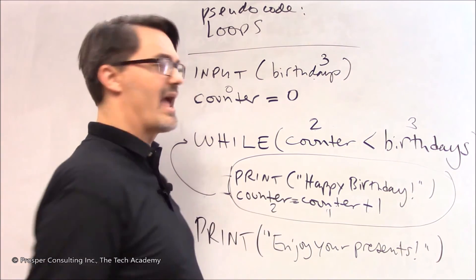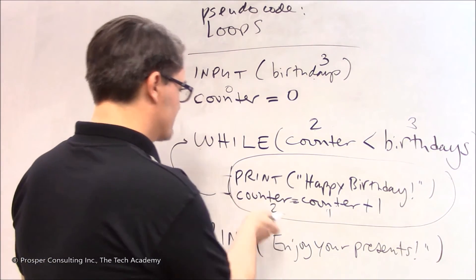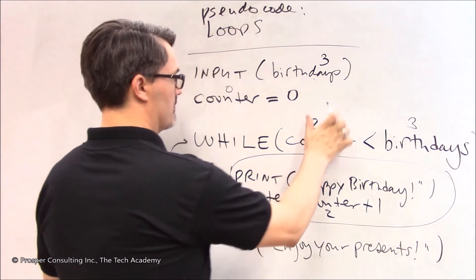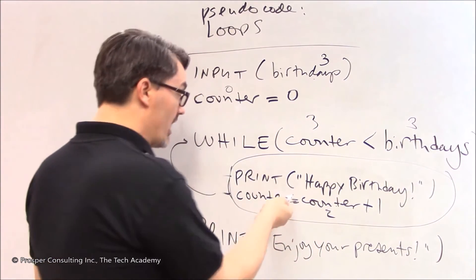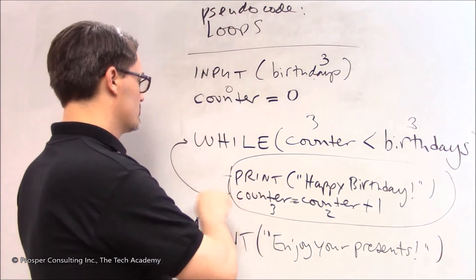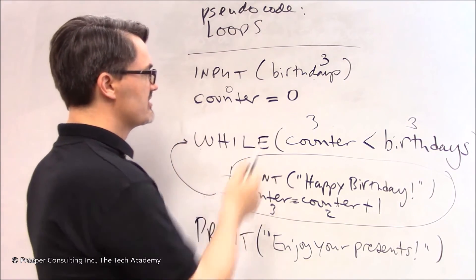It prints a third happy birthday. And then it takes counter which is currently equal to two, adds one and makes it three. And it's done. There's nothing else inside this little while section.